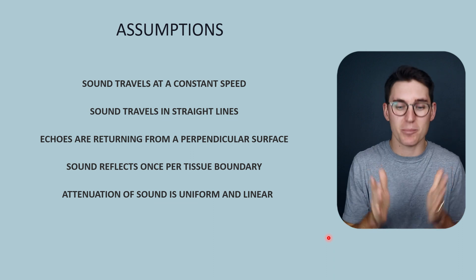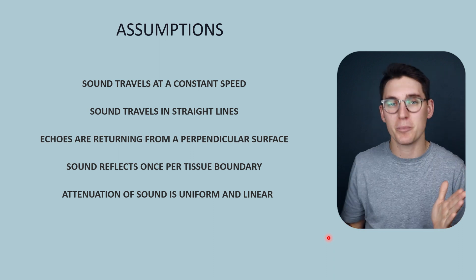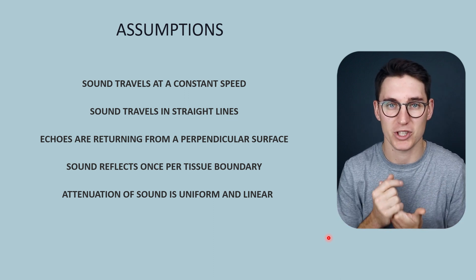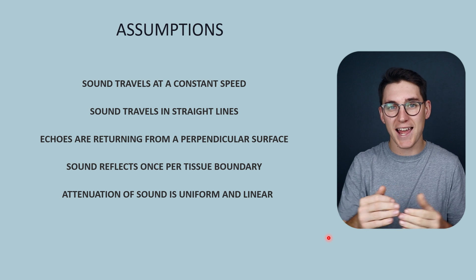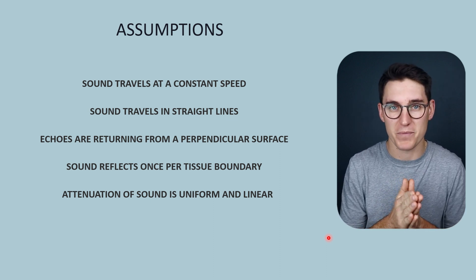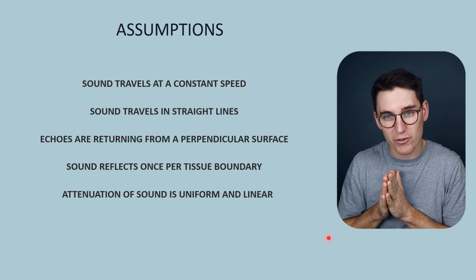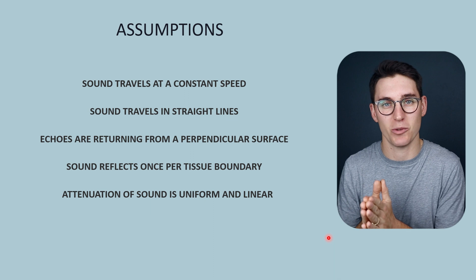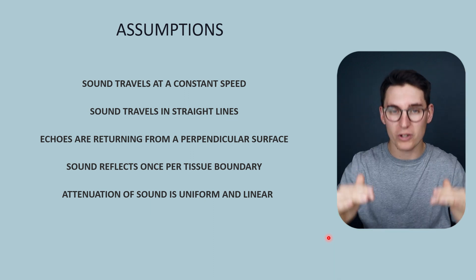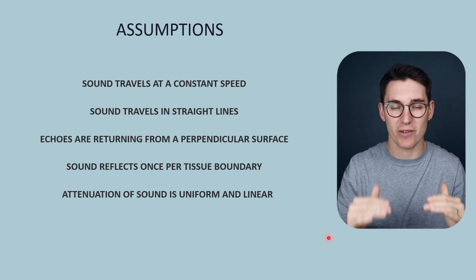The last assumption made by the transducer is that the attenuation of sound throughout our B-mode image is linear depending on depth. In reality, it depends on the types of tissue through which the ultrasound is traveling. Ultrasound is highly attenuated by bone, for instance, but travels through water with very little attenuation. The machine assumes that all A-lines of data have been attenuated in the same way as it travels to tissue depth.